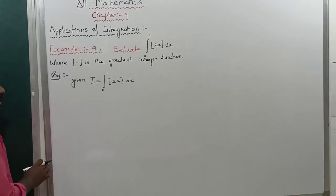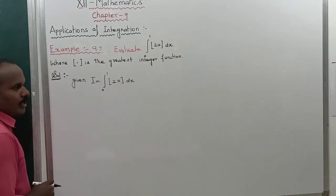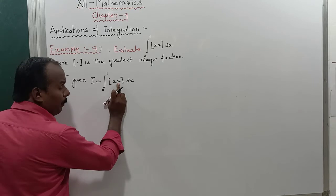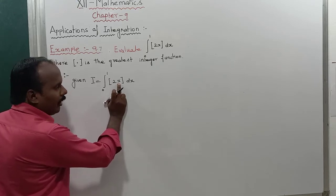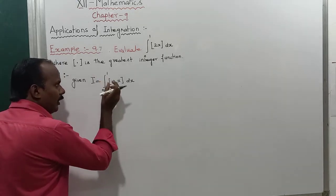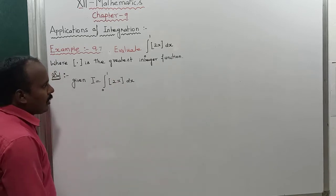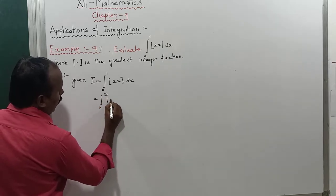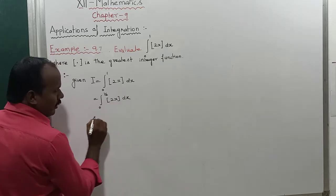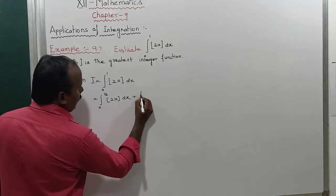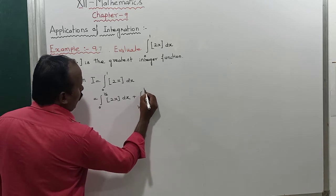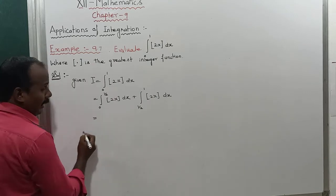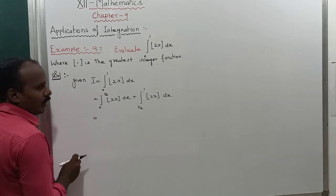Consider the function 2x. For the greatest integer function, in the interval, the key value is 1/2. At x = 1/2, the function 2x equals 1, which is a whole number, so that is where we split. Therefore I = ∫₀^(1/2) ⌊2x⌋ dx + ∫_(1/2)^1 ⌊2x⌋ dx.